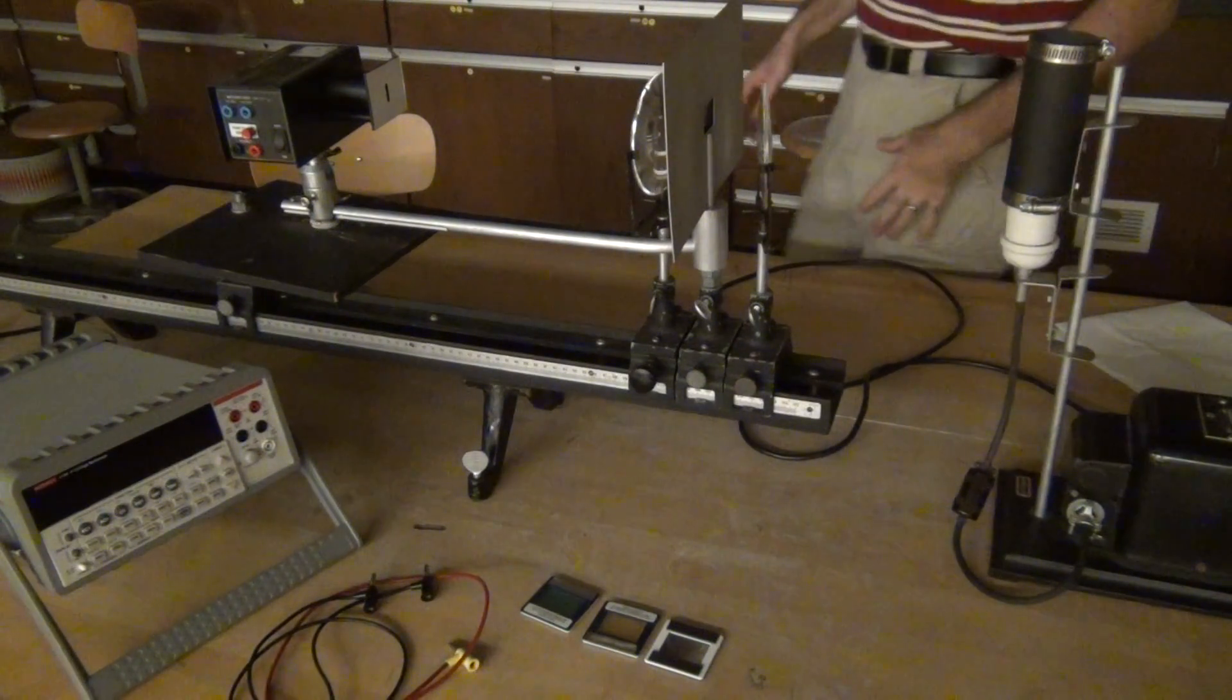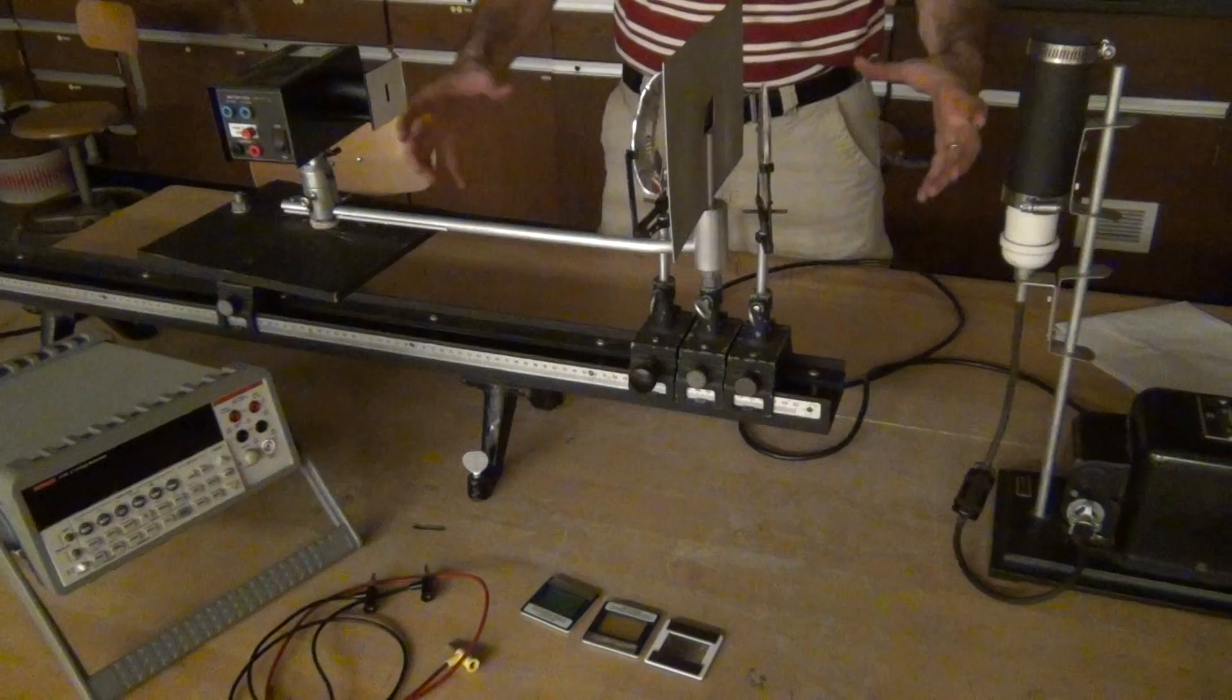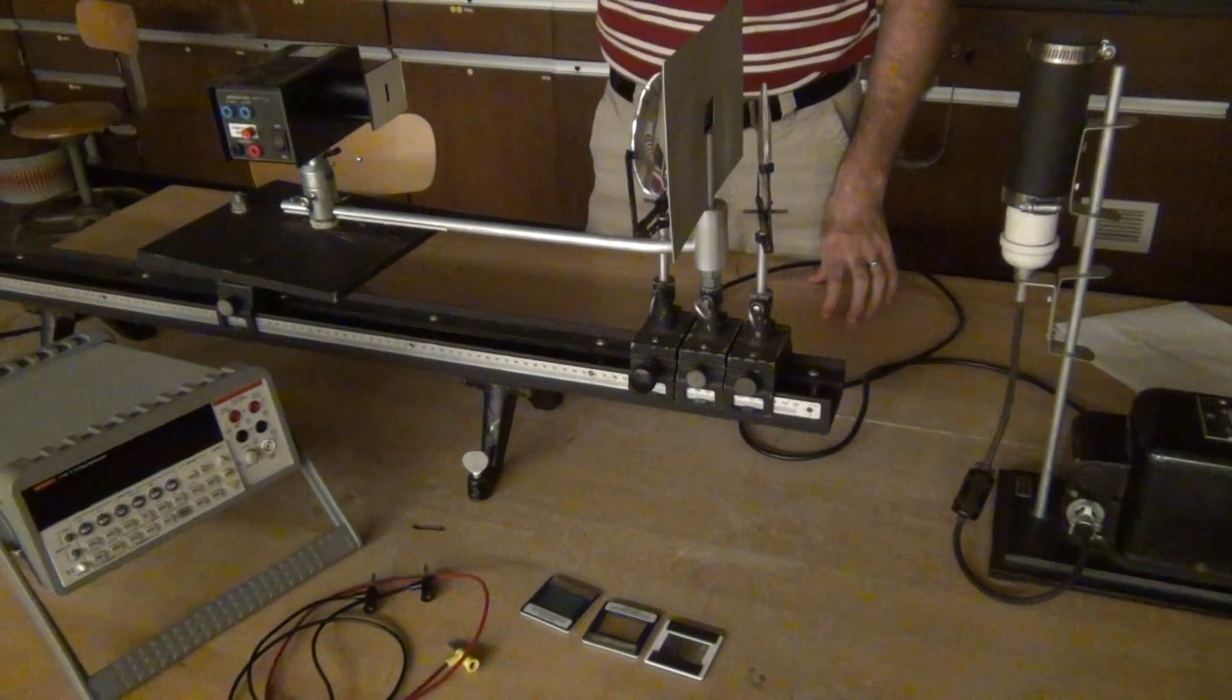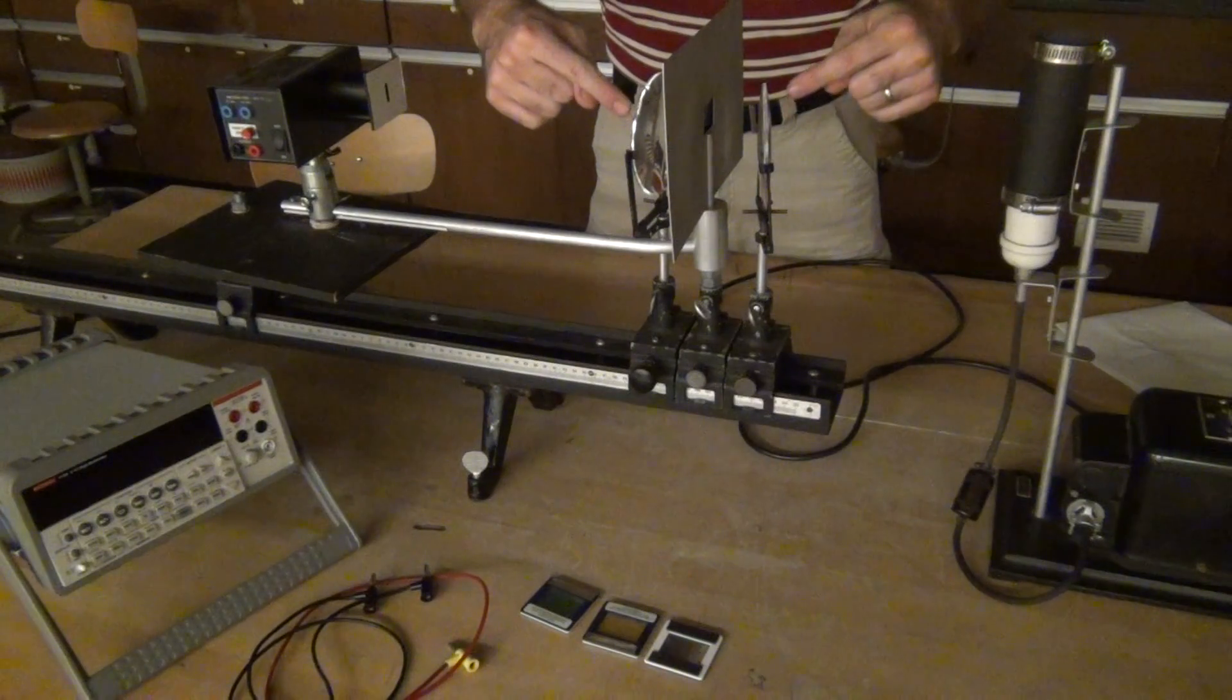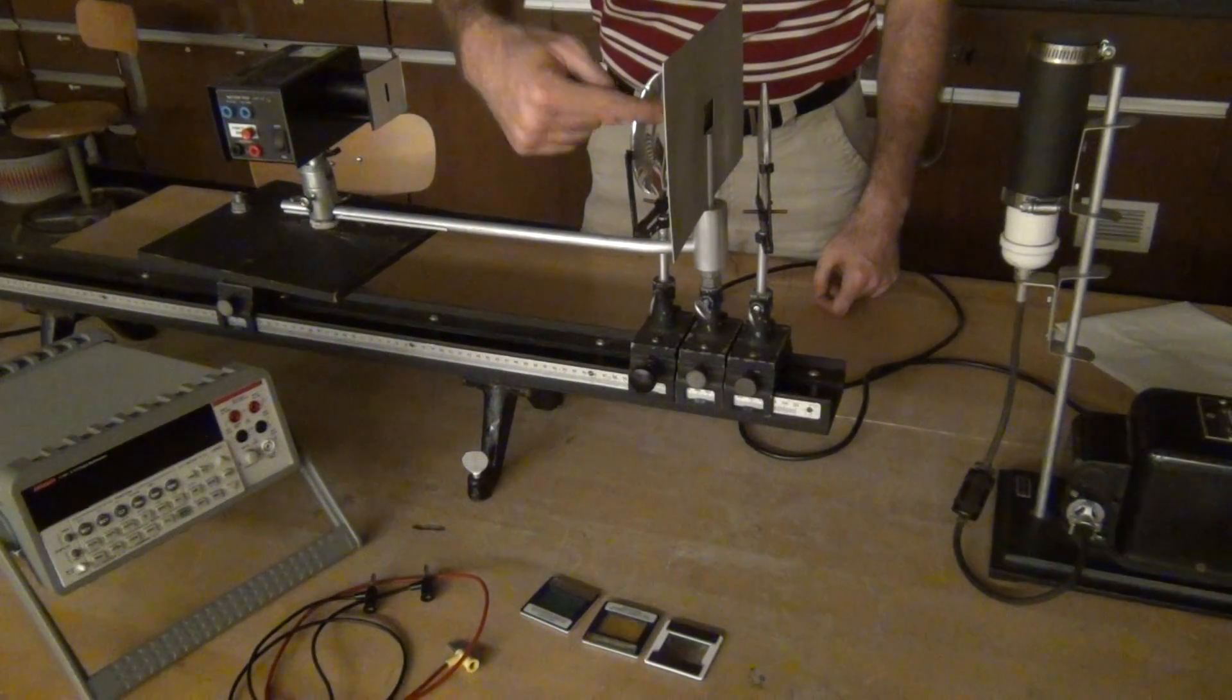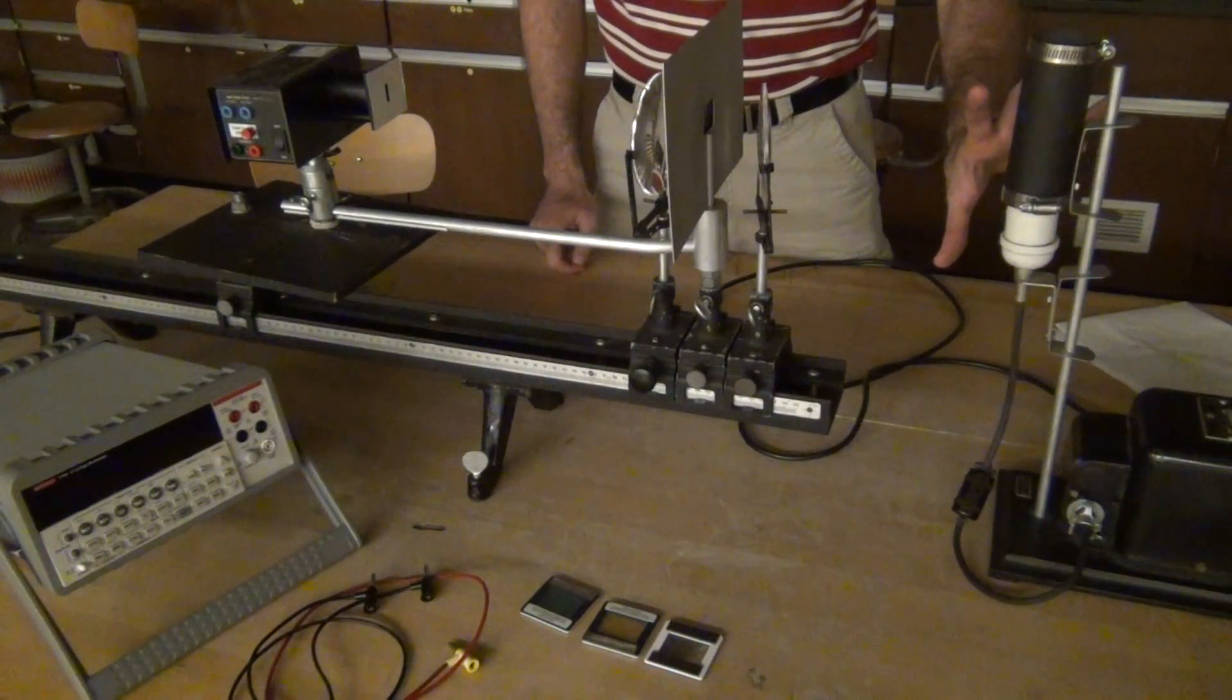Here we have this set up for the Planck's constant experiment. We have a photodiode that we'll use to measure the light. We have two lenses surrounding our diffraction grating, which is in its holder here. We have a mercury lamp.